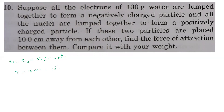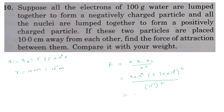Force formula: F = k·q1·q2 / r² = 9×10⁹ × (5.35×10⁶)² / (10⁻¹)². Multiplying and simplifying, we get F = 2.56×10²⁵ newton. This is the enormous force of attraction between the lumped electron and nuclear charges from 100 grams of water placed 10 cm apart.